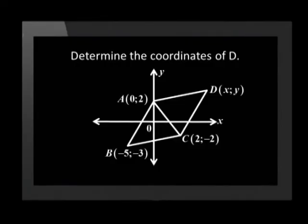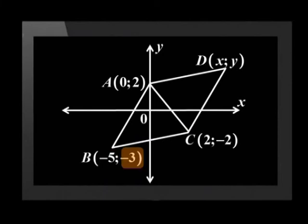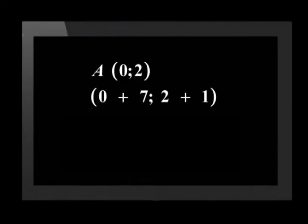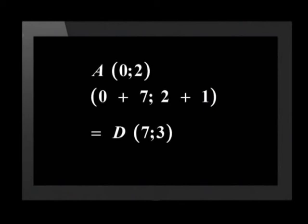Let's try the next question together: determine the coordinates of D. Remember, a parallelogram is a regular shape, so what happens on one side happens on the other side too. This means the distance between A and D is the same as between B and C. From B to C, the x-coordinate changes from negative 5 to 2, so 7 is added. The y-coordinate changes from negative 3 to negative 2, so 1 unit is added. Applying the same changes from A(0, 2): 0 plus 7 is 7, and 2 plus 1 is 3. Therefore D equals (7, 3).